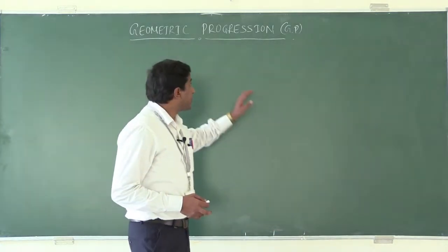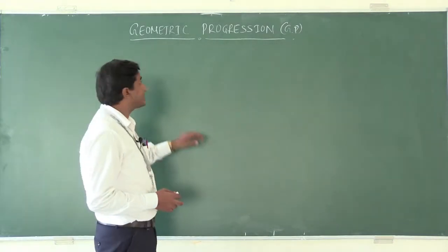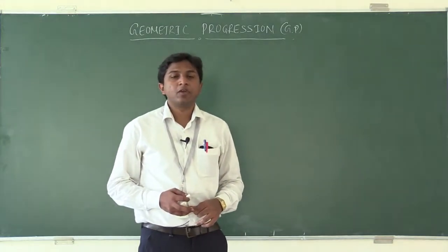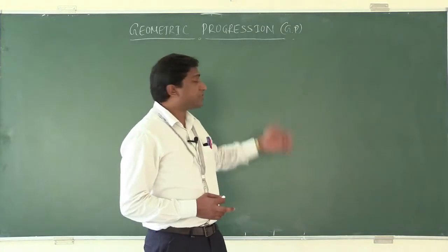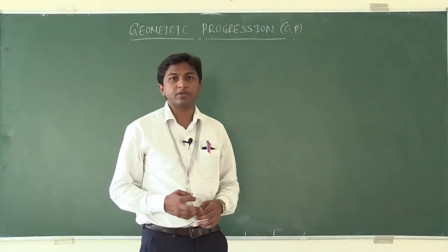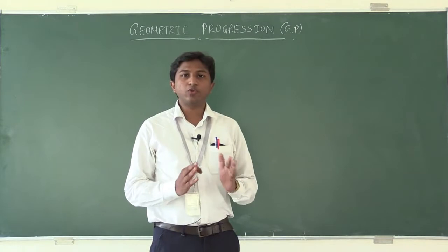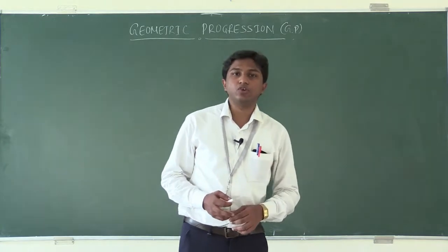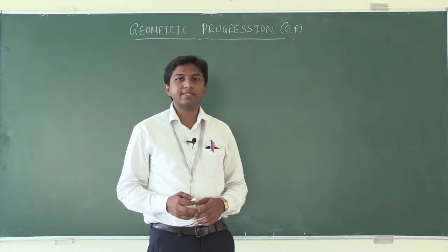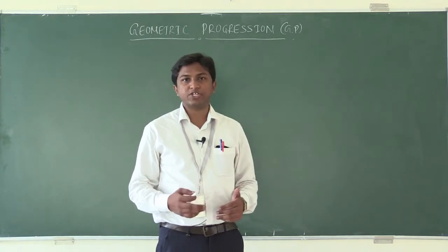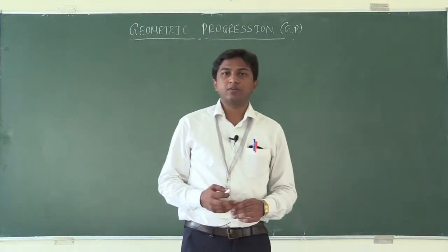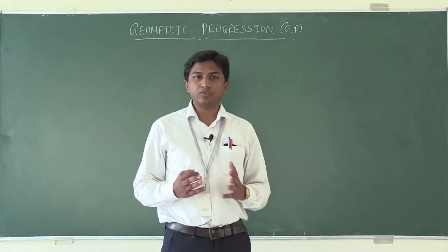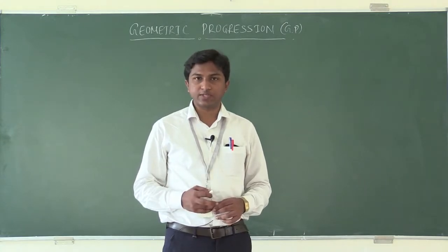The name of this kind of sequence is geometric progression, or in short we can call it as GP. Just like AP, geometric progression or GP is a sequence of numbers. The only difference between AP and GP is that in AP you have a common difference, whereas in GP we have a common ratio. So I can define a GP as a sequence of numbers wherein we have a common ratio between any two consecutive terms.